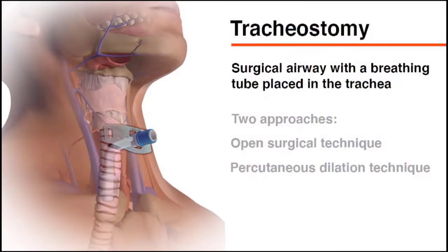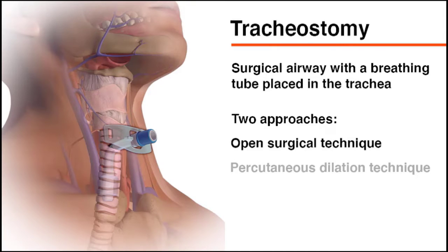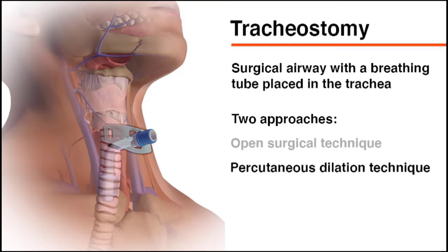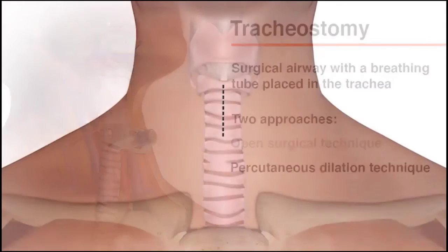A tracheostomy is a surgically created airway that is kept open with a breathing tube or tracheostomy tube. The tube is inserted directly into the trachea through an incision in the neck. A tracheostomy can be created with the use of an open surgical technique or a percutaneous dilation technique, and can take place in the operating room or at the patient's bedside.